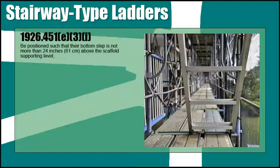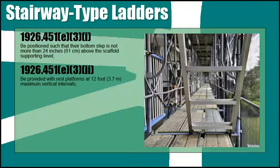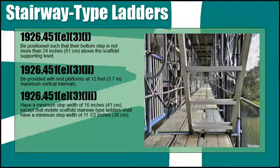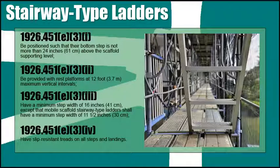Stairway-type ladders shall be positioned such that their bottom step is not more than 24 inches above the scaffold supporting level. They must be provided with rest platforms at 12-foot maximum vertical intervals. They shall have a minimum step width of 16 inches — except that mobile scaffold stairway-type ladders shall have a minimum step width of 11 and a half inches — and have slip-resistant treads on all steps and landings. Stairway-type ladders are faster to assemble than a stair tower and work best when the platform is not very high.